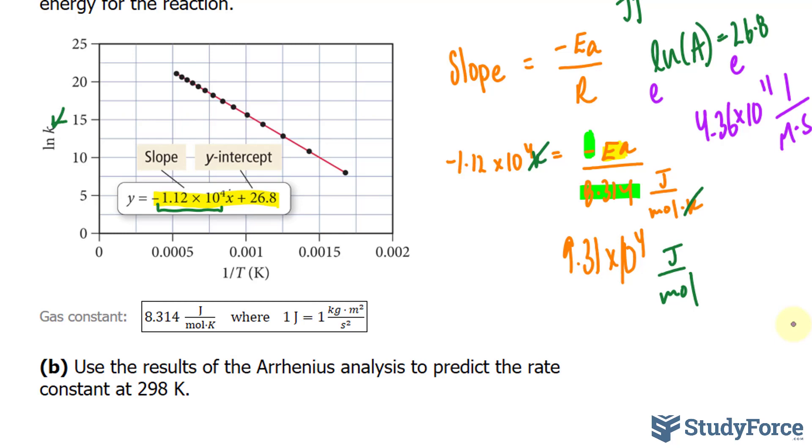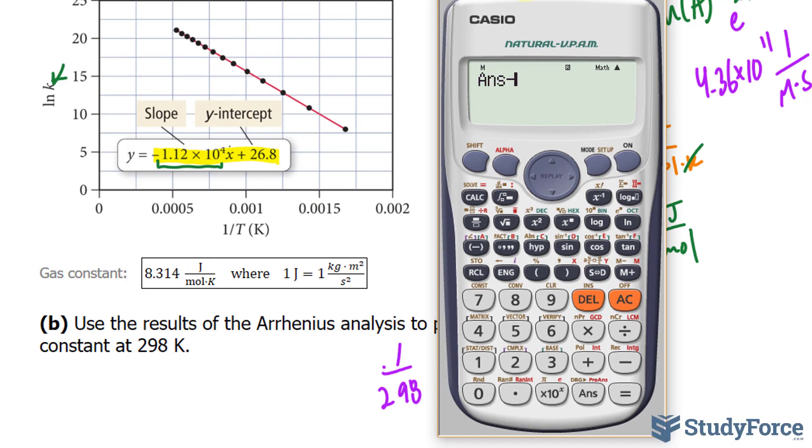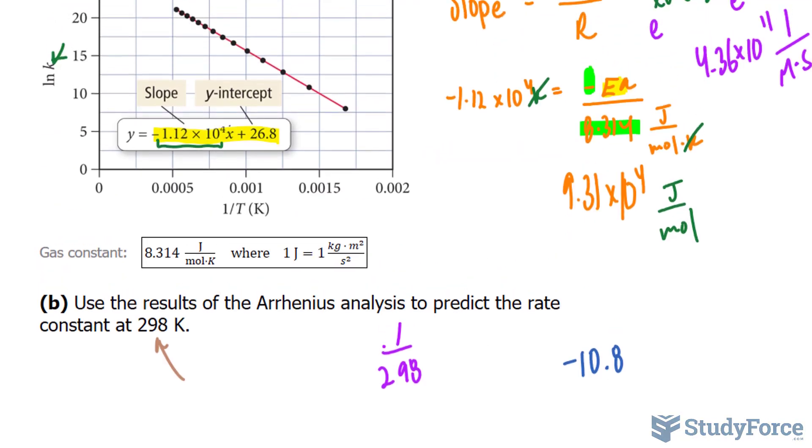So this time, they want us to take 298 Kelvin, the temperature, and substitute it into there. But I can't just substitute 298. I need to reciprocate it. So I have 1 over 298. Then I substitute this number into x. Let's go ahead and do that. We have negative 1.12 times 10 to the power of 4. And that's being multiplied to 1 over 298 plus 26.8. That gives us negative 10.78. Negative 10.8. And that is your y-coordinate.